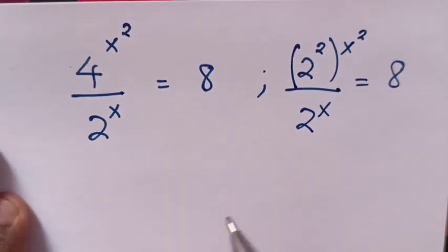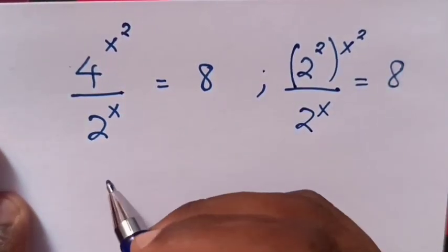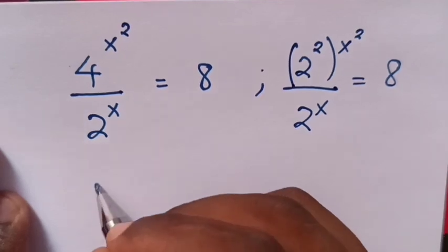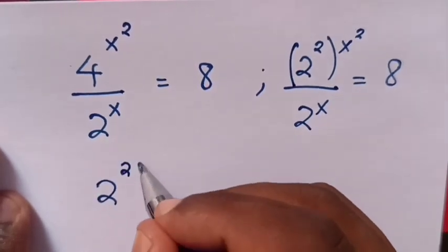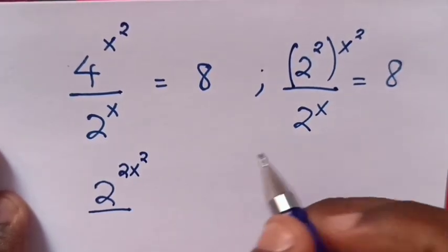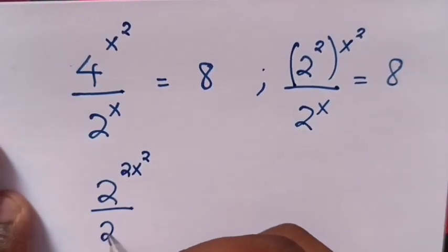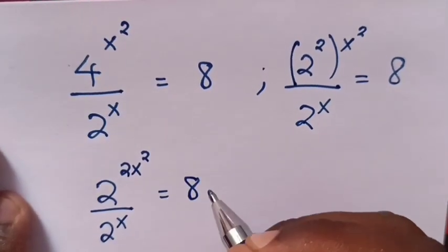we multiply the powers, so it will be 2 to the power of 2x squared over 2 to the power x equals 8.